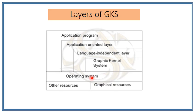The GKS — Graphic Kernel System — is a standard or format used to view or draft shapes of objects. Above that is the language independent layer, which is available in an independent format since there are a number of languages like C, C++, and Java.